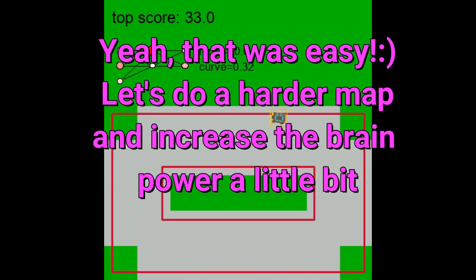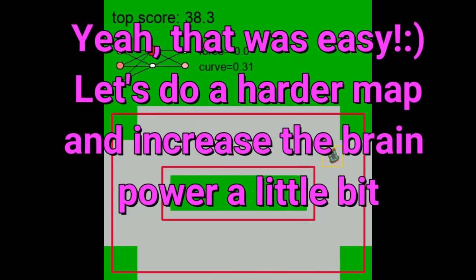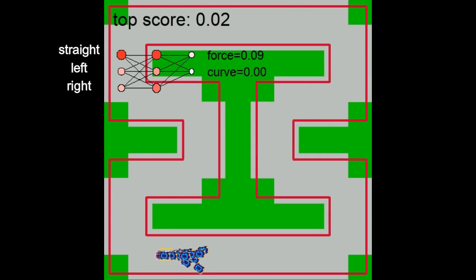Now let's do a harder map and increase the brain power a little bit. As you can see, we added one neuron to the hidden layer.